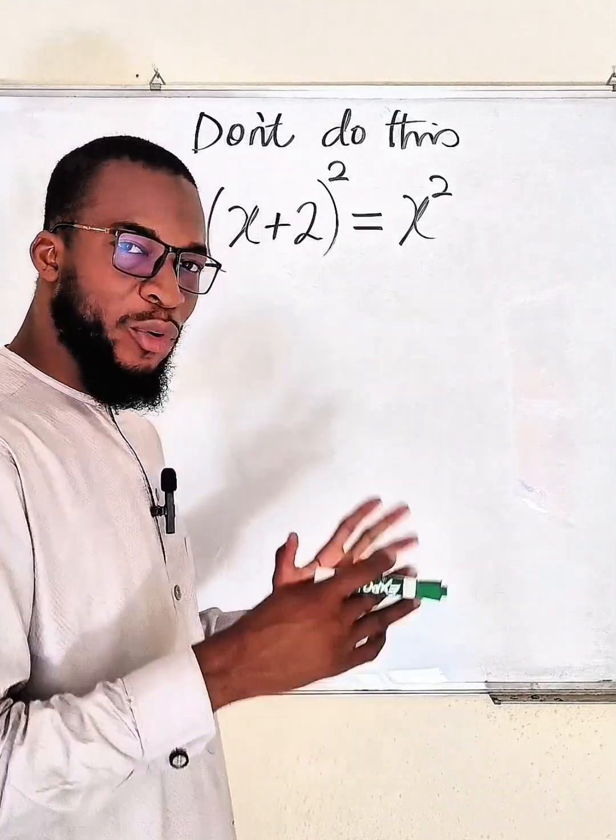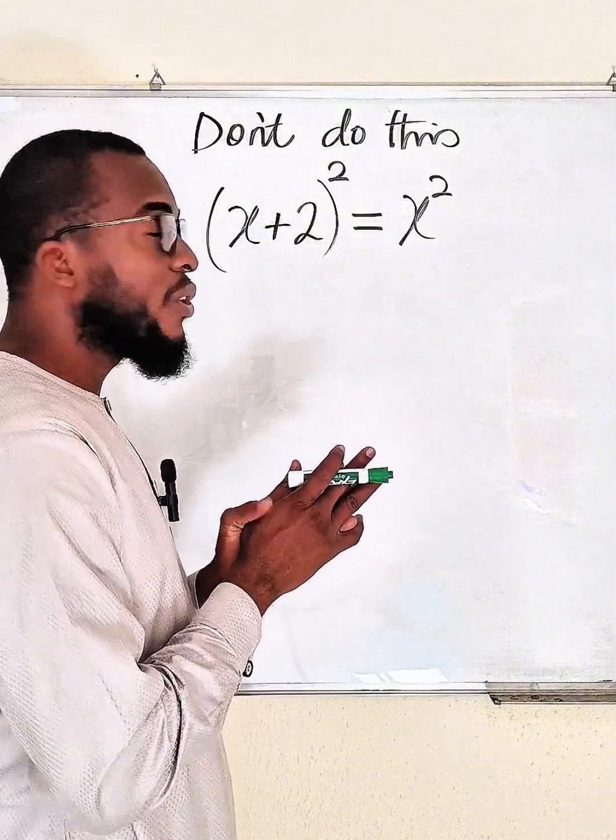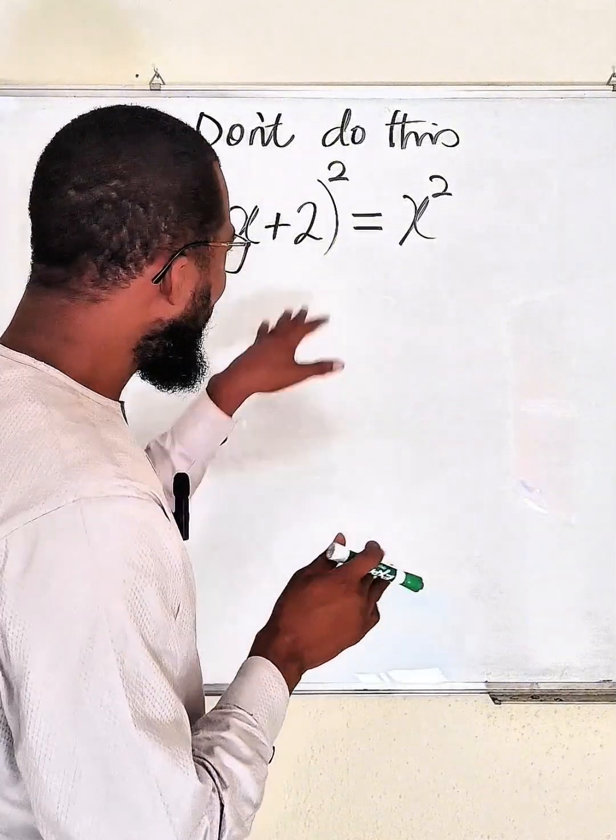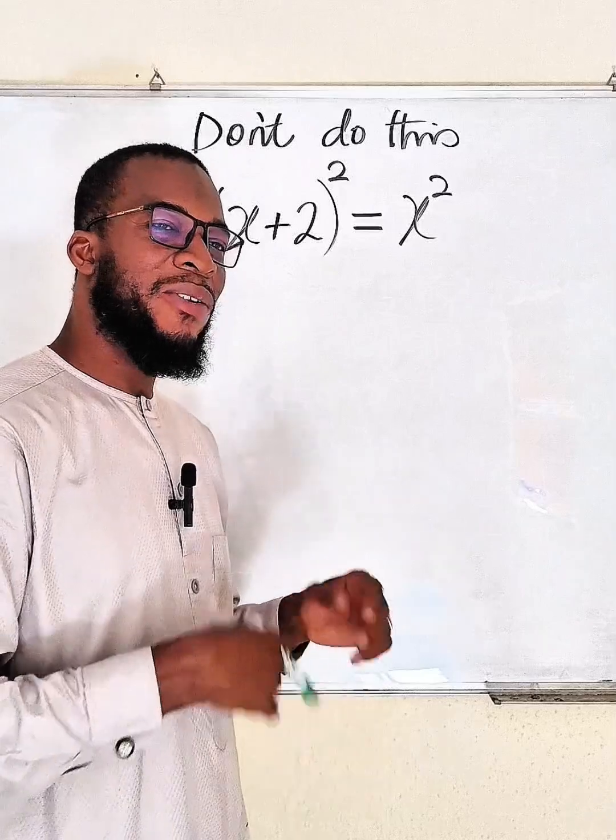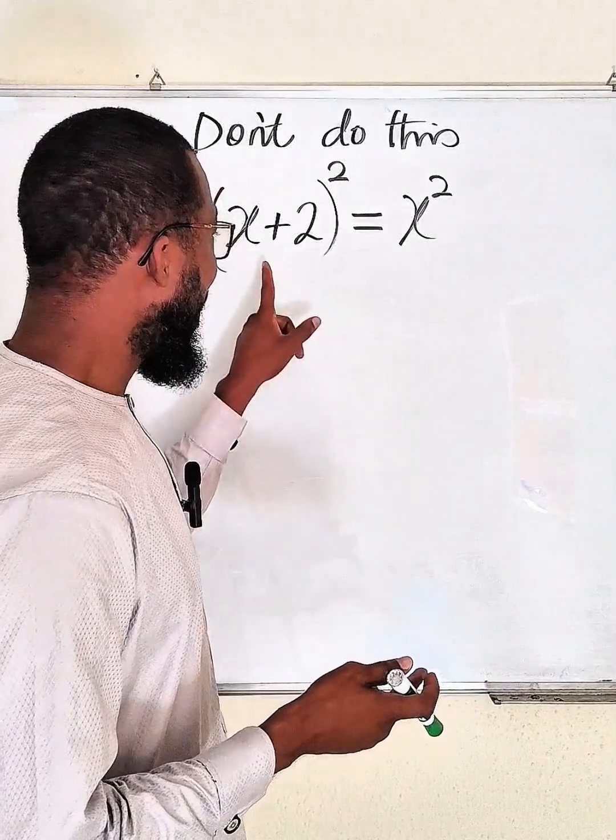The problem is (x+2)² = x². Why am I bringing this? I have seen a lot of teachers online telling students that they can equate the bases from left to right once they have equal exponents. That is very wrong.